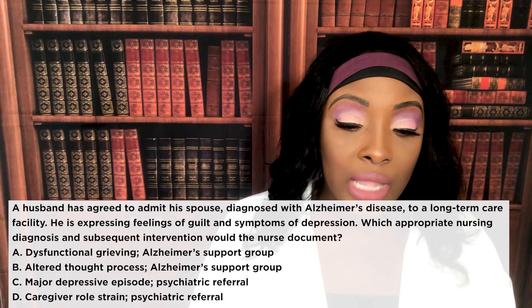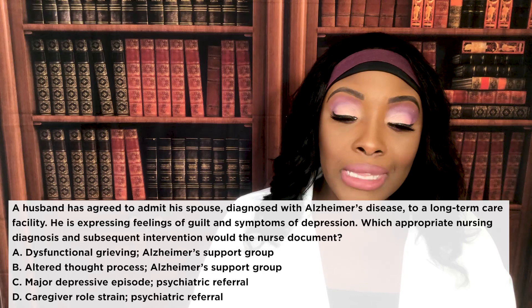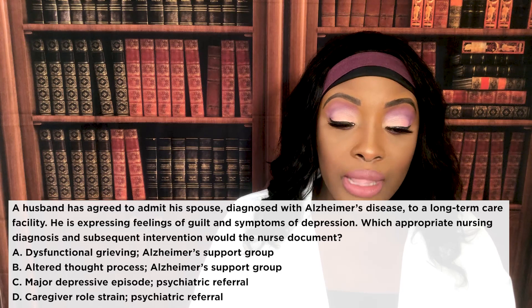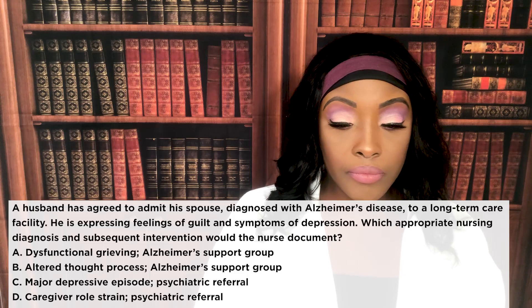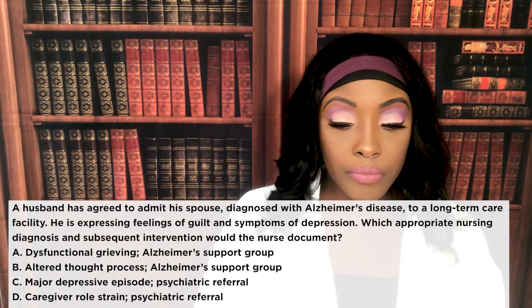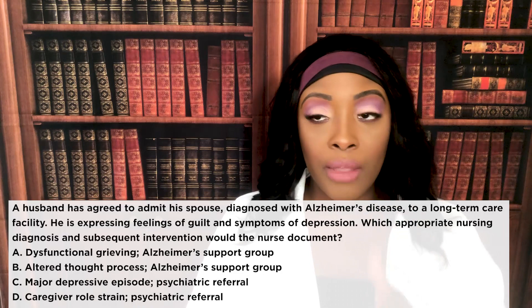Next question. A husband has agreed to admit his spouse diagnosed with Alzheimer's disease to a long-term care facility. He's expressing feelings of guilt and symptoms of depression. Which nursing diagnosis and intervention would the nurse document? A: Dysfunctional grieving — Alzheimer's support group. B: Altered thought process — Alzheimer's support group. C: Major depressive episode — psychiatric referral. D: Caregiver role strain — psychiatric referral.